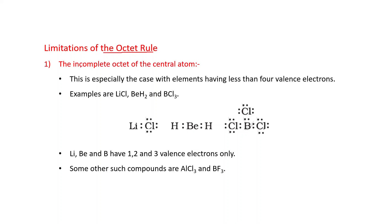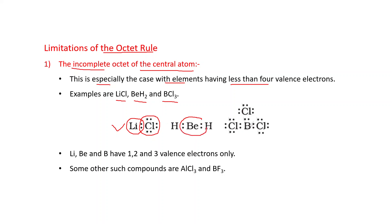Limitations of the octet rule. First: incomplete octet of the central atom — this is especially the case with elements having less than four valence electrons, where their octet is not completed. For example, lithium chloride, beryllium hydride, and boron trichloride. The octet of chlorine is completed, but the octet of lithium is not. Similarly, the octet of beryllium is not completed in BeH₂, and the octet of boron is not completed in BCl₃ — with boron, only six electrons are there. Lithium, beryllium, and boron have one, two, and three valence electrons respectively. Other examples: AlCl₃ and BF₃ — these are considered electron-deficient species.